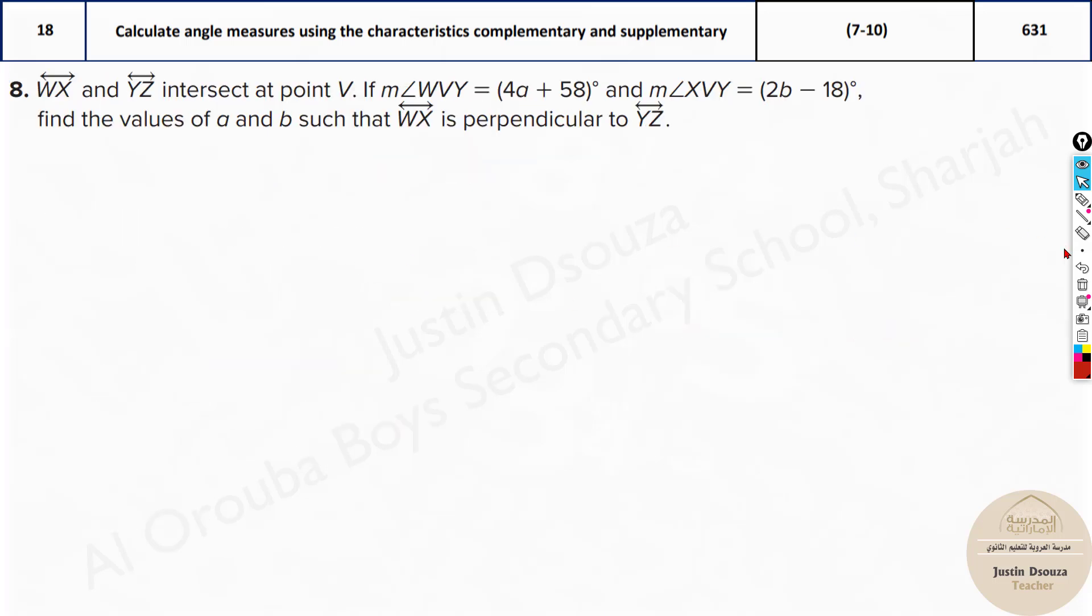We can look at this problem as well, because over here they have to be intersecting at a point V. So now we have a line WX and then YZ, and they intersect at a point V, and they have given the measure of the angles. So let's just draw two random lines. I'm drawing it perpendicular because they have clearly mentioned over here they are perpendicular WX. Imagine this is WX and this is YZ. They are perpendicular. And now the point V is where they intersect. This is the point where they are intersecting, V.